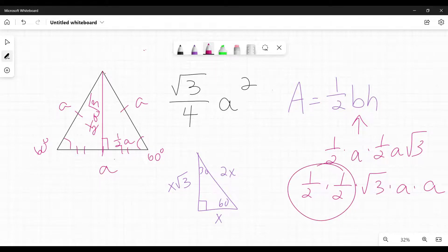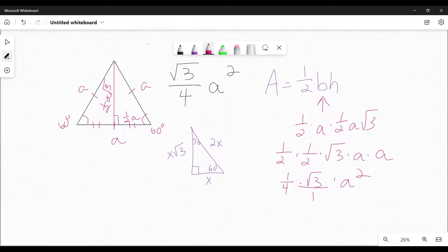First, one half times one half is one fourth. Multiplying that by the square root of 3. And then A times A is A squared. Square root of 3 times one fourth. We can combine those because that's the same as square root of 3 over 1. So if I multiply those together, I get, dun-dun-dun, square root of 3 over 4 times A squared. That's where that formula comes from.